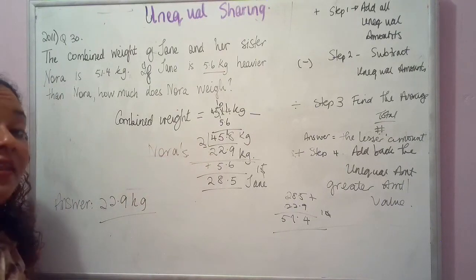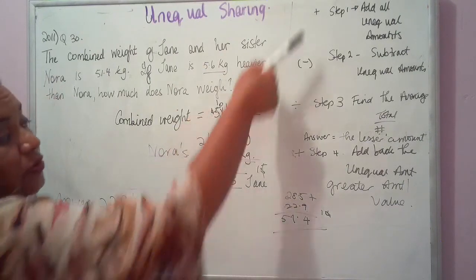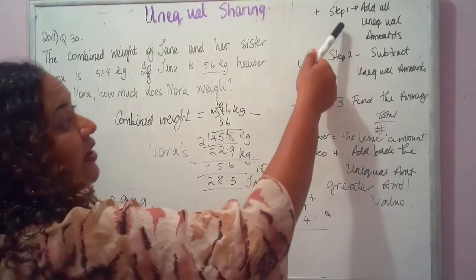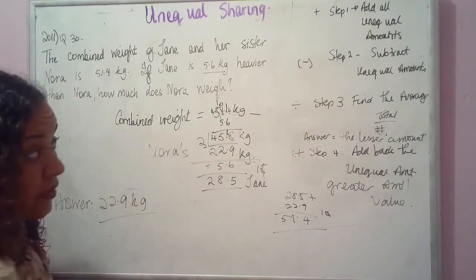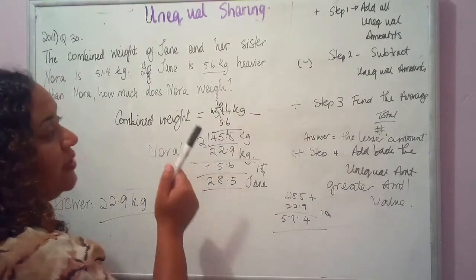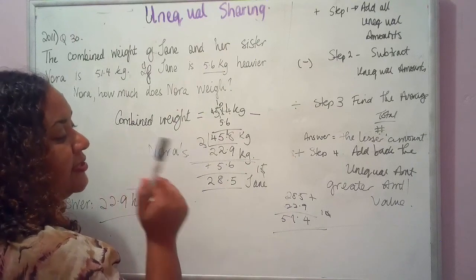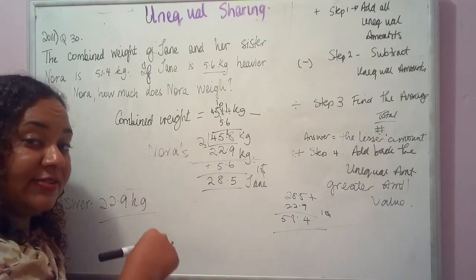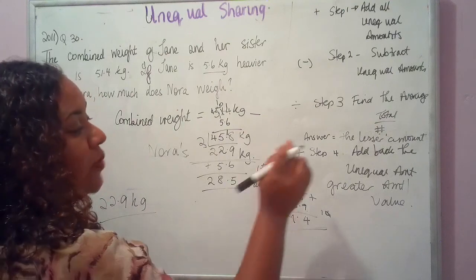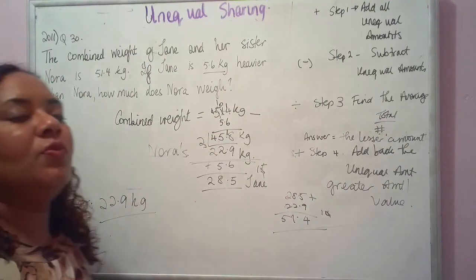If the question had asked you to find Jane's weight, you would need to go through all four steps. We identified the unequal amount, subtracted it, found the average — getting the person who weighs less — then added back the unequal amount to get the person who weighs more.